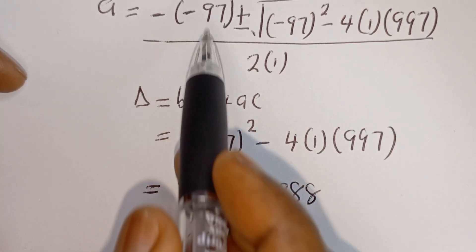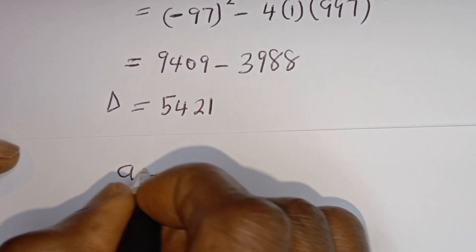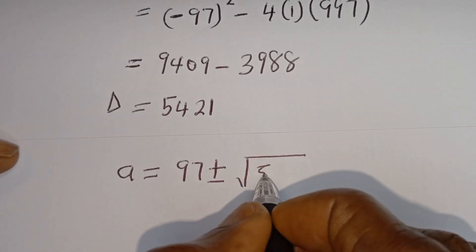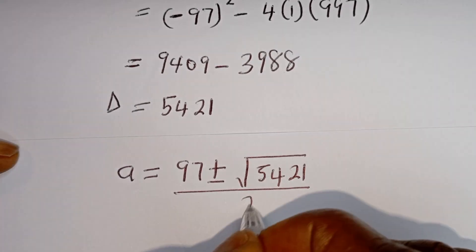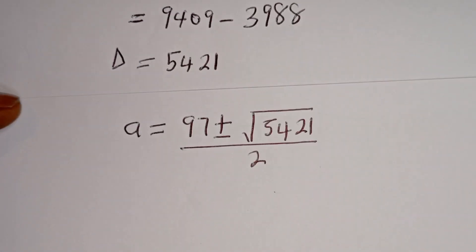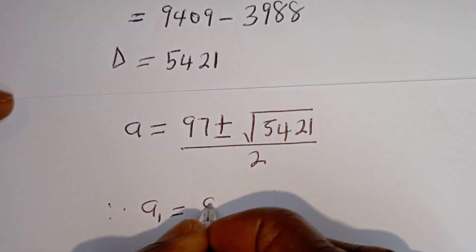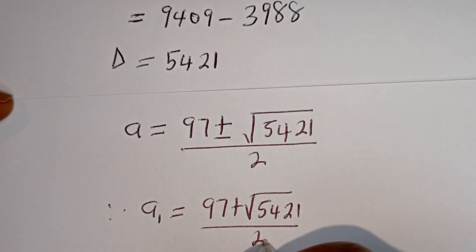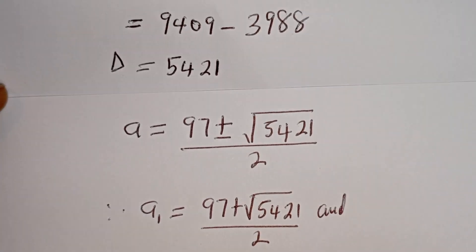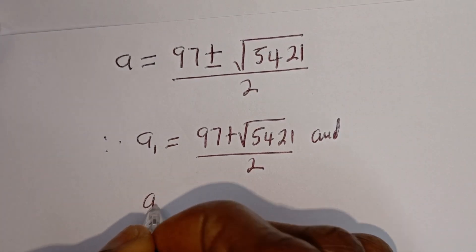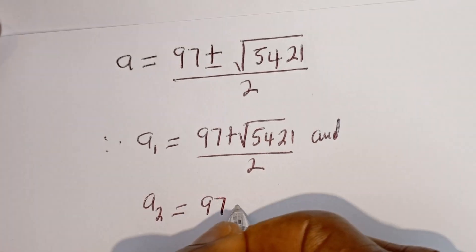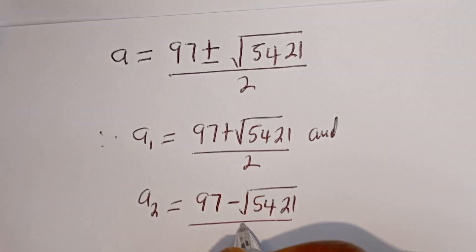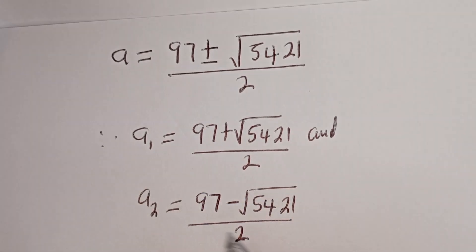From here, minus minus 97 becomes plus 97. So a equals 97 plus or minus square root of 5421, over 2. Therefore, a1 equals (97 plus square root of 5421) over 2, and a2 equals (97 minus square root of 5421) over 2.